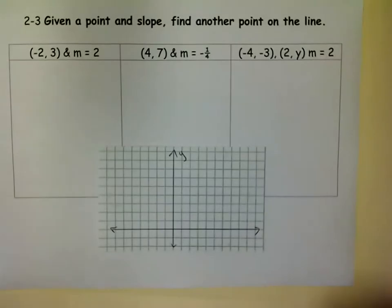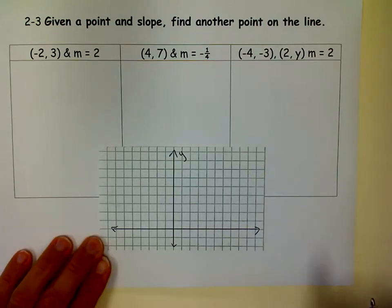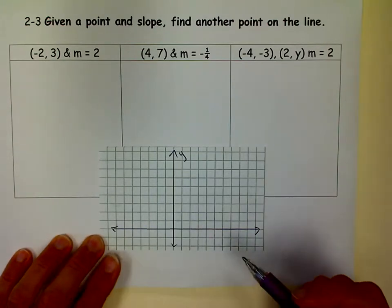Greetings, this is m squared, and we are going to find another point on the line. They've already given us a point and a slope, and so there's two ways to do that. You can either graph the point and then use the slope to graph some more points and pick one of those points, or I'll do that first and then I'll show you a different way.